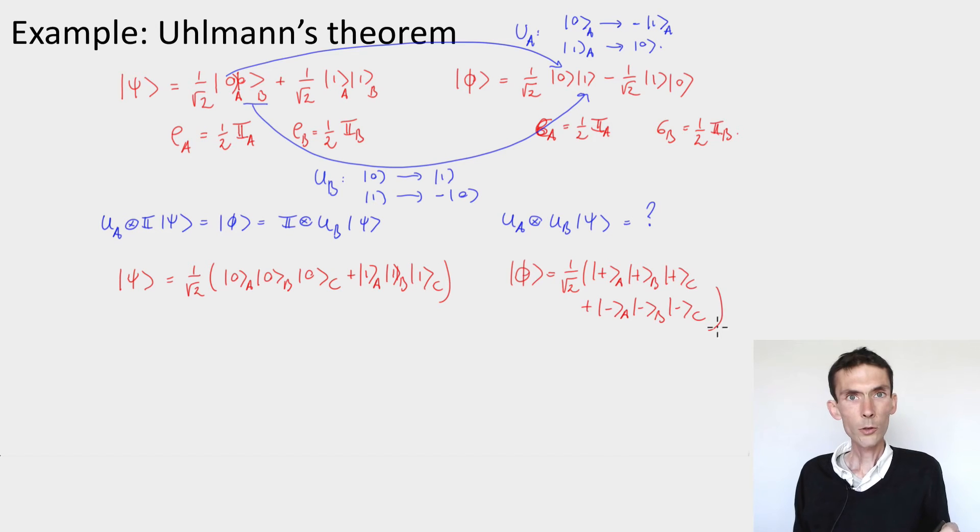Now these two states have the same property, essentially, as my state psi and phi, in the sense that all of their single qubit reduced density matrices are the totally mixed state, half of the identity, and here also.